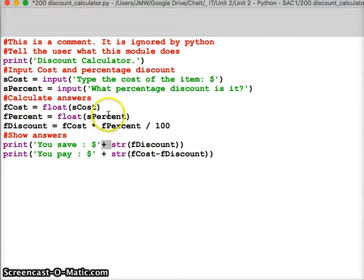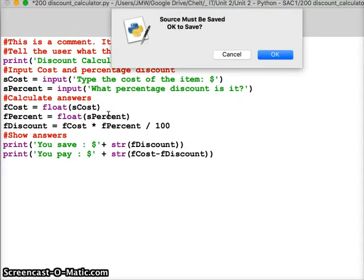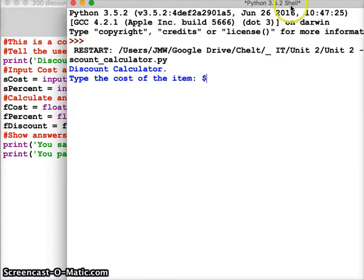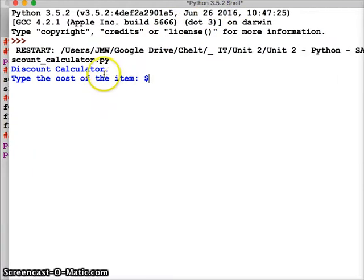So let's see how this works. I'm going to press f5 and see it go through its paces. So here we go. The first thing that it's actually saying is it's typing discount calculator on the screen. It's saying what's the cost.